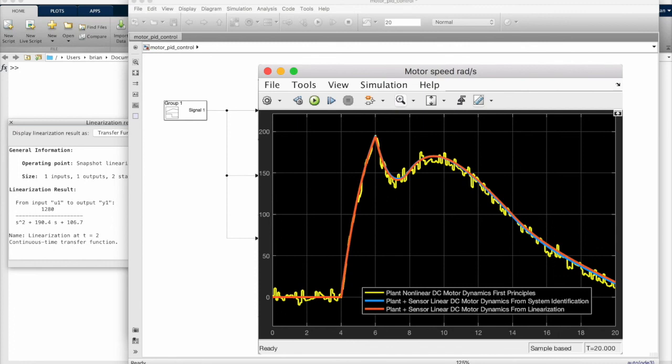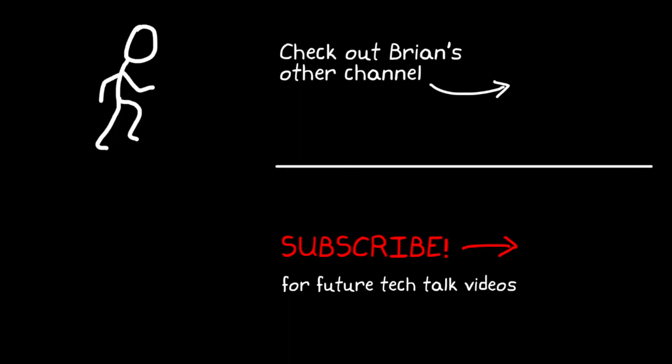It's now at this point that we can start the process of developing a PID controller for our system, and we have four different systems that we can use. There's the physical system itself, and then the three different models we generated of it. Well, in the next video we're going to dive deeper into these tuning methods using MATLAB and Simulink. So if you don't want to miss the next Tech Talk video, don't forget to subscribe to this channel. Also, if you want to check out my channel, Control System Lectures, I cover more control theory topics there as well. Thanks for watching, and I'll see you next time.